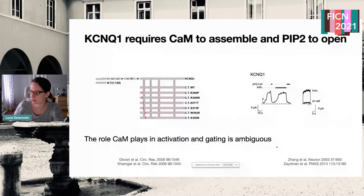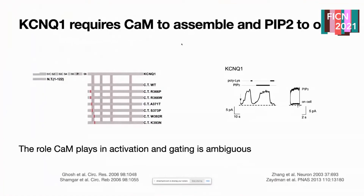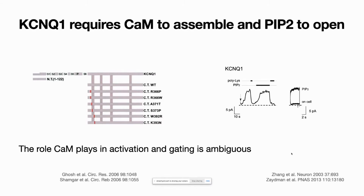KCNQ1 is a cardiac channel that requires calmodulin to assemble and traffic to the plasma membrane, and it also requires PIP2 to open. You can see that the channel opens under regular conditions, but when you introduce a chemical that depletes PIP2 from the membrane, the current disappears. By re-adding PIP2 into the solution, it gets incorporated into the membrane and the channel opens again. The way PIP2 operates and the role calmodulin plays in activation and gating — not in assembly — is quite ambiguous, and this is what we set out to work on.